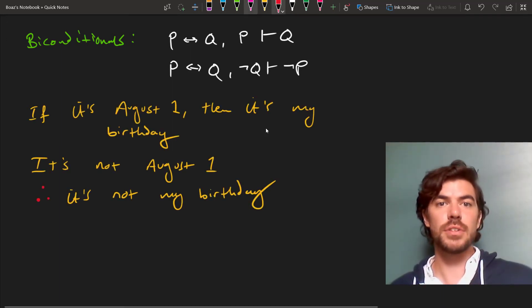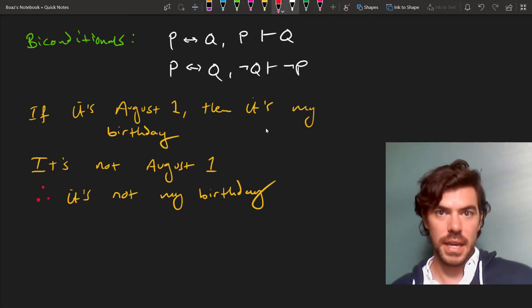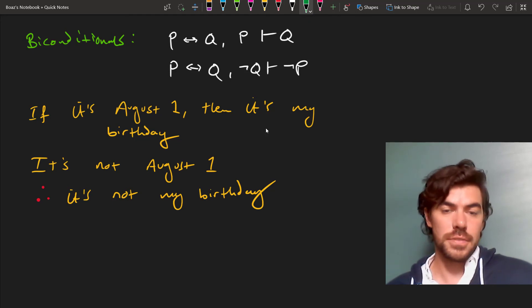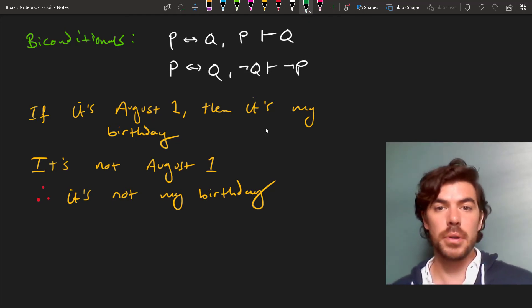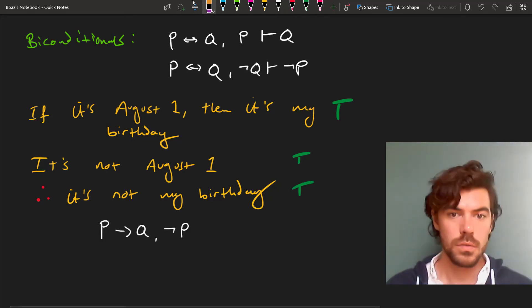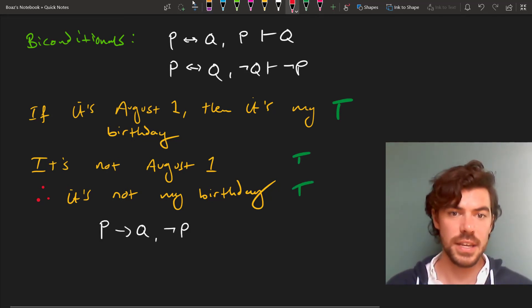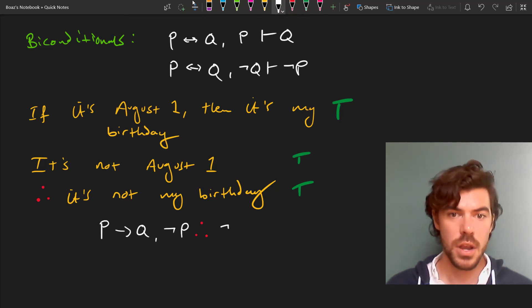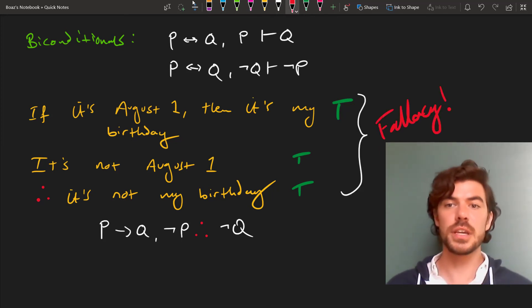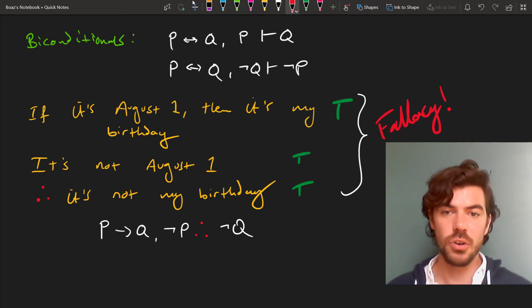So for instance, if it's August 1st, then it's my birthday. And it's not August 1st, so it's not my birthday. As it happens, these come out all true. While it looks valid, this actually has the form if P then Q, not P, therefore not Q. So it's actually a fallacy. Even though it's all Ts, it doesn't follow the form in which if the antecedents are true, then the consequent must be true.